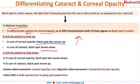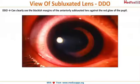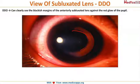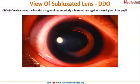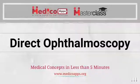An important point: DDO is the gold standard for locating a subluxated lens. You can clearly see the margins of the subluxated lens against the red fundal glow. This makes distant direct ophthalmoscopy the gold standard for diagnosis of a subluxated lens.